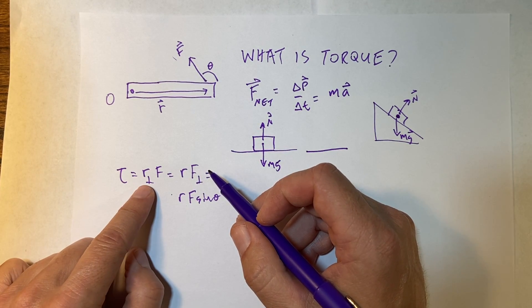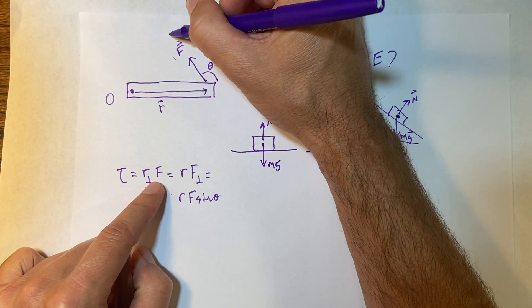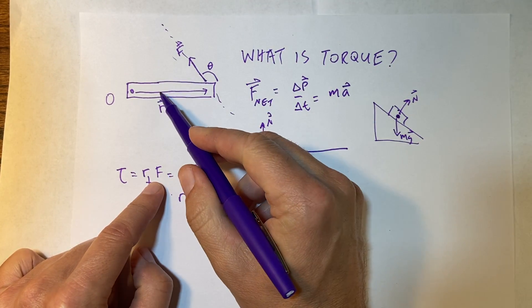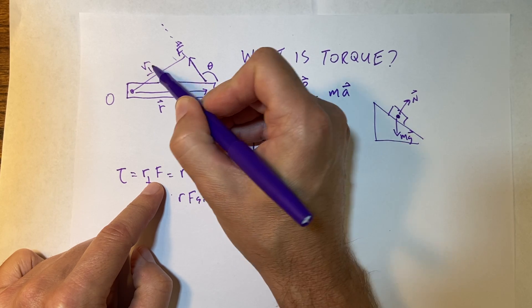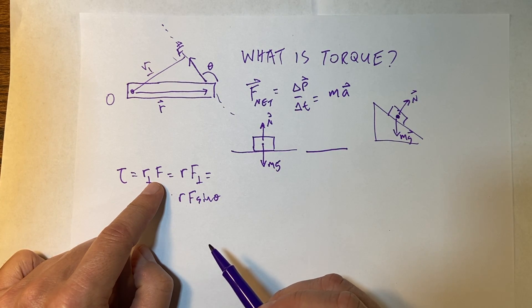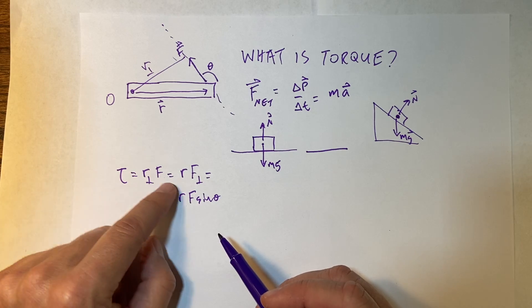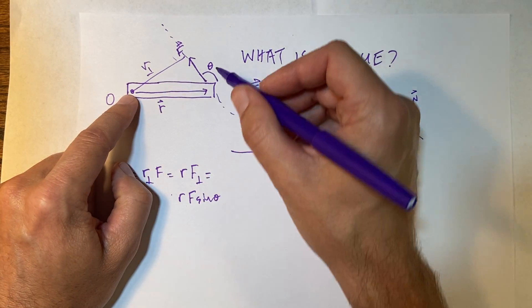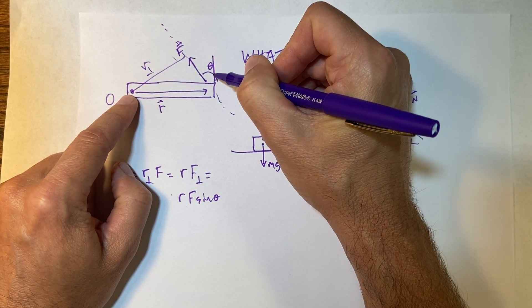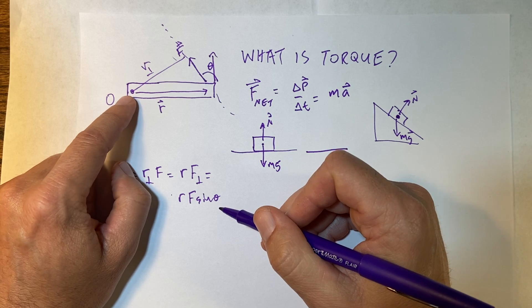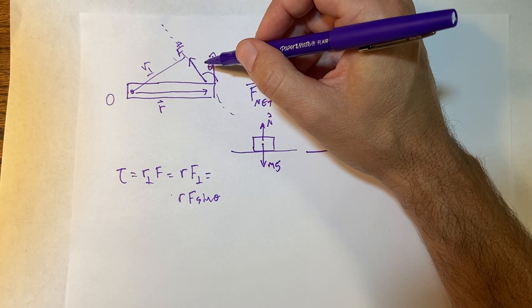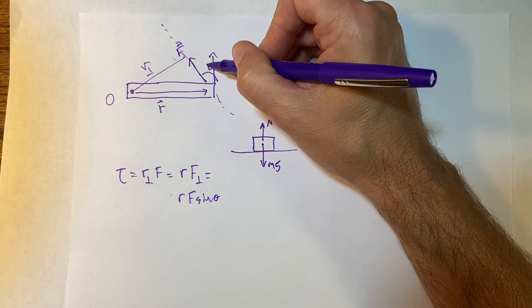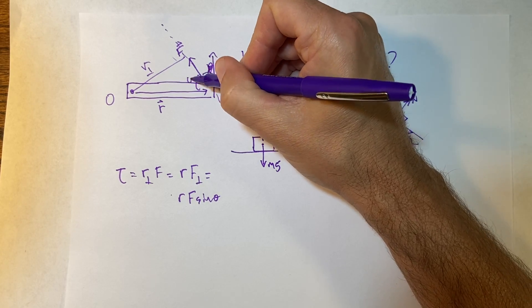So if I look at this R perpendicular F, that's really this. If I draw a line like that, and I don't use this R, I use this R. That's the perpendicular distance. Or I could use the normal R, and I could use this component of, actually, my theta's wrong. Theta should be this. Sorry, that's theta.